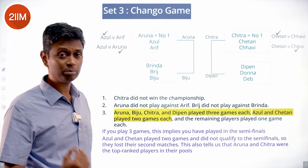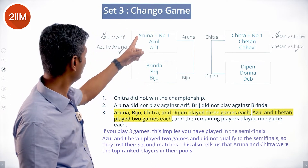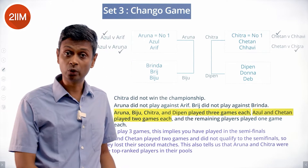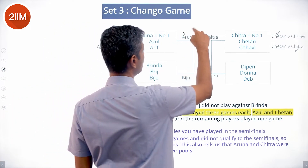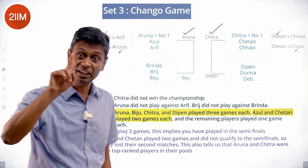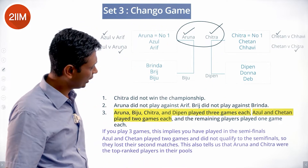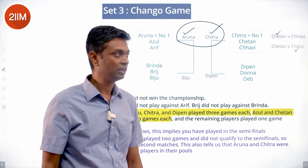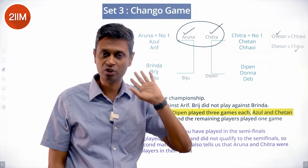Aruna played one group game against Azul, then a semi-final against Biju — and Aruna won that. Chitra played her group game, then beat Dipen in the semi-final. The final was between Aruna and Chitra. Since Chitra did not win the championship, Aruna beat Chitra in the final.